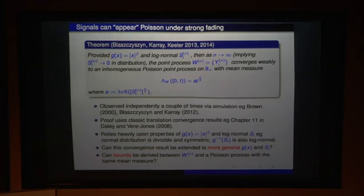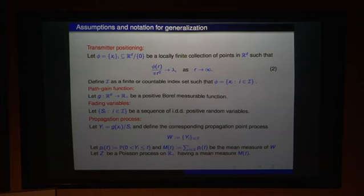And, as I mentioned, this was observed about 15 years ago now, and then Bartek and Mohamed observed it again, and then it was proven using somewhat classical results. But the proof relied heavily upon it being log-normal, that is, that the normal variable is divisible, and it's symmetric, and also the log-normal variable raised to some power is also log-normal. And, as I said, we wanted to generalize this for more general path loss function, any reasonable path loss or path gain function, and any reasonable independent fading or shadowing variables. And, we're also interested in if we could derive bounds on, instead of just having a convergence result, could we have some sort of bounds to give us an indication of how accurate or not accurate this thing was.